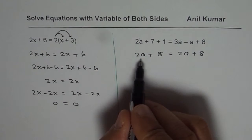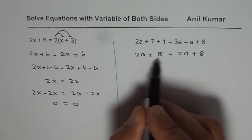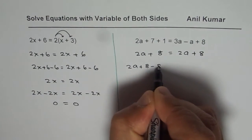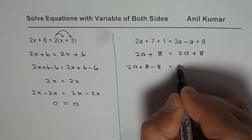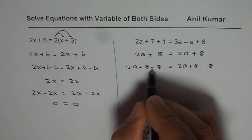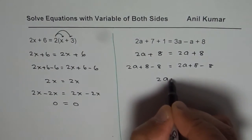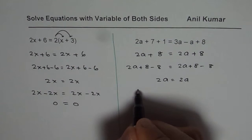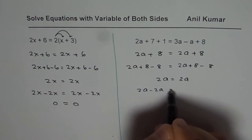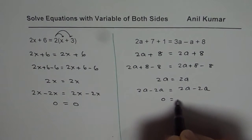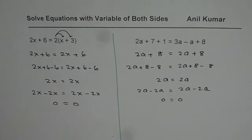Let us take away the numbers. We have 2a plus 8 minus 8 equals to 2a plus 8 minus 8. That means 8 minus 8 is 0, so 2a equals to 2a. Now subtracting 2a from both sides: 2a minus 2a equals to 2a minus 2a. Again we get 0 equals to 0.